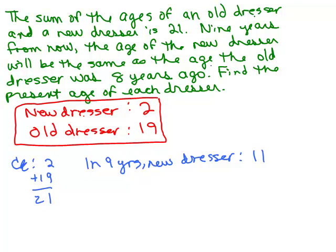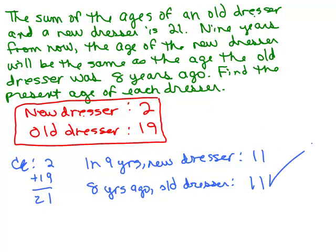Eight years ago, the old dresser was what? It's 19 now, so 8 years ago it was 11. The new dresser nine years from now is 11, and the old dresser eight years ago was also 11 — they are the same. So it does check. The age of the new dresser is 2 and the age of the old dresser is 19.